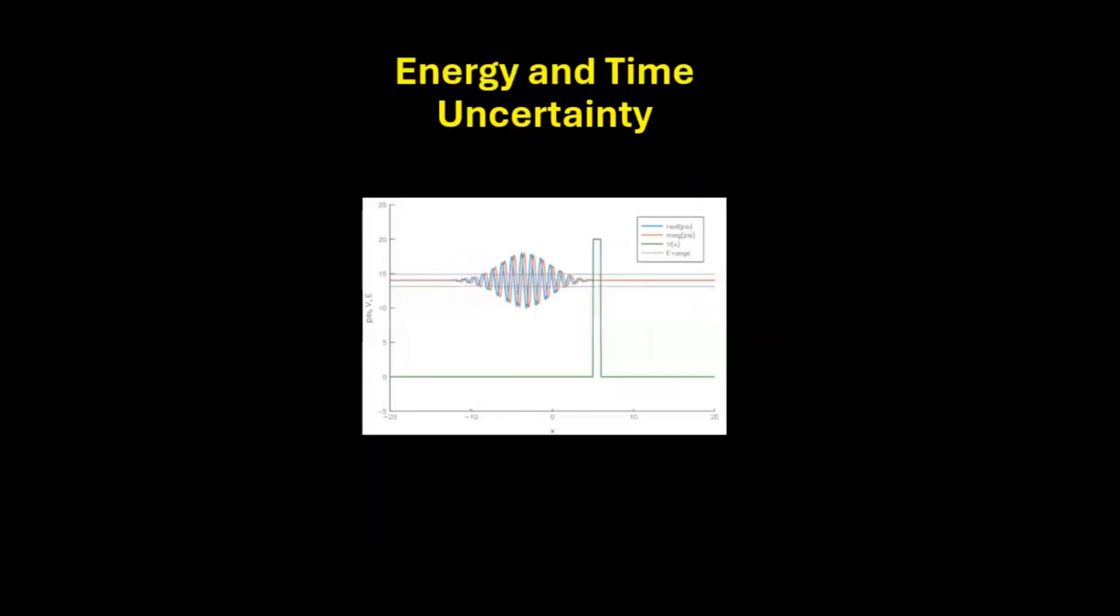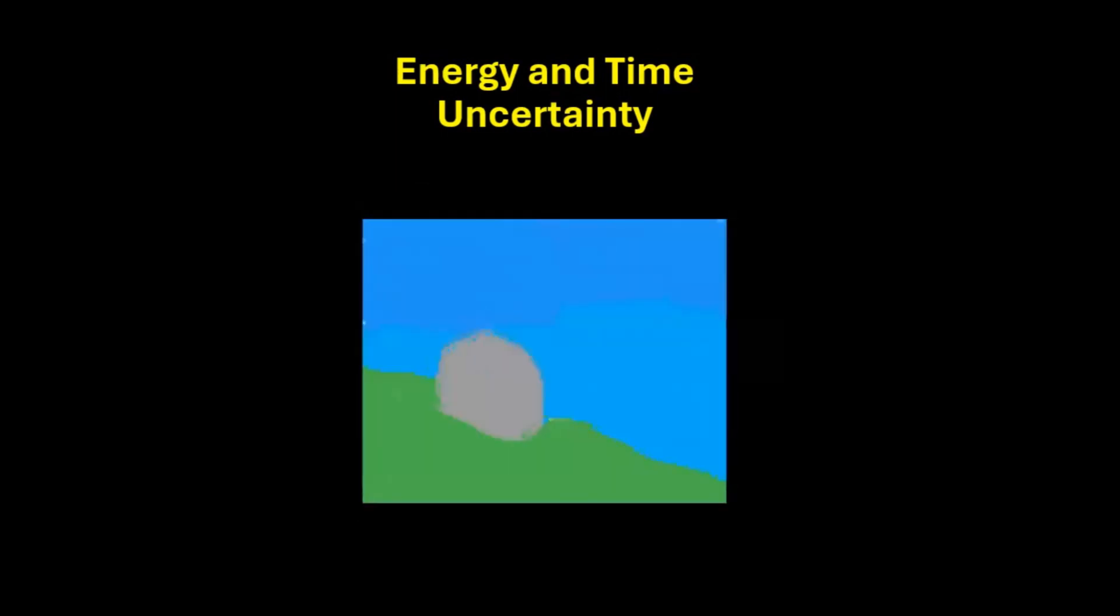Quantum tunneling is a surprising event where tiny particles pass through barriers they typically can't overcome. In classical terms, a ball lacking enough energy would roll back from a hill. Likewise, particles without sufficient energy should bounce off or get absorbed by barriers.